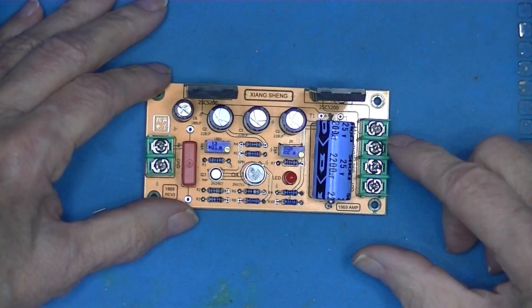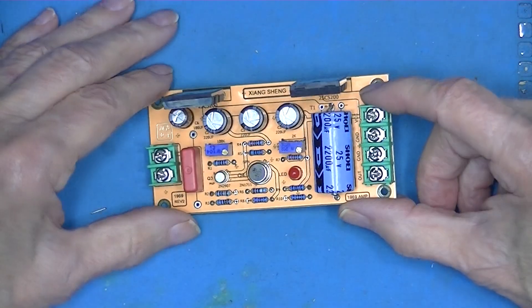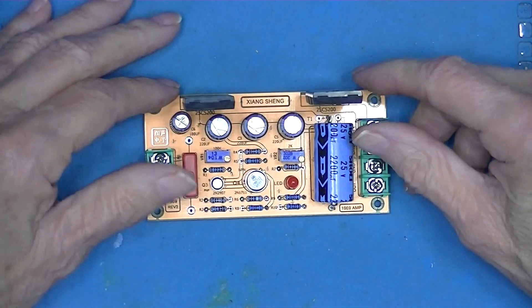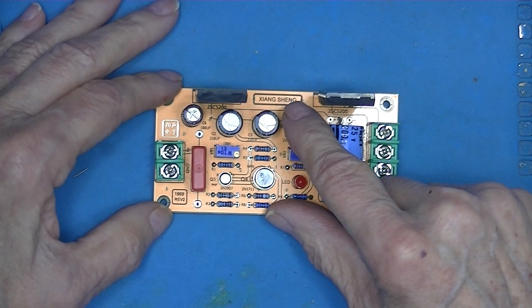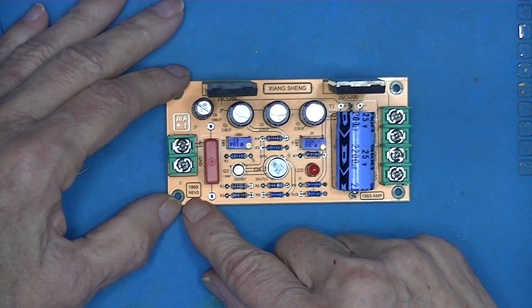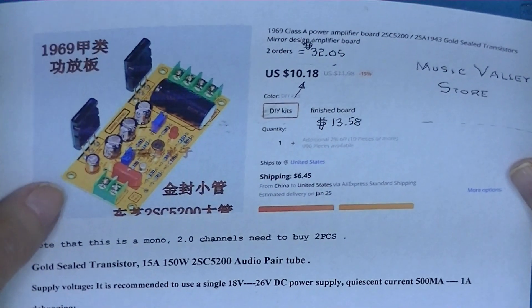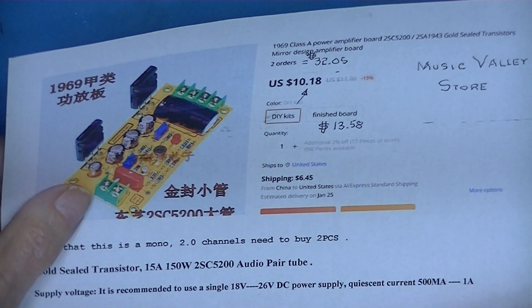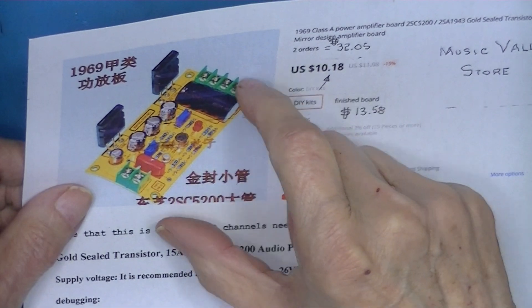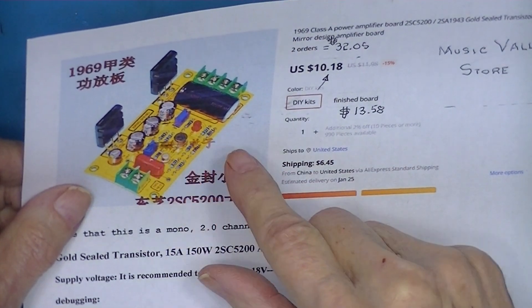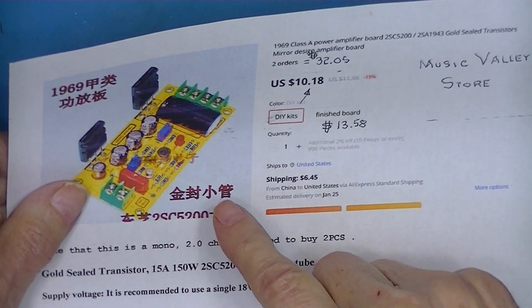This will be number seven in my JLH amplifier series. I got this from Aliexpress, it was already constructed. It is available in kit form, it's marked Zhang Seng 1969 Rev 2. The Aliexpress seller is Music Valley Store. To correct my previous video, I did buy two of these. The reason I bought two was to make sure they were available in mirrored pairs.